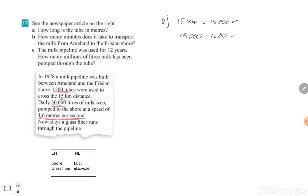All right, exercise B: How many minutes does it take to transport the milk from Ameland to the Frisian shore? Now what we know is the distance, 50 kilometers, and 1.6 meters per second.